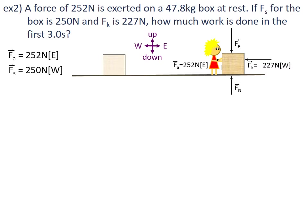Before we move on, we should switch that so it is east as well. Fk is going to be equal to negative 227 newtons in the east direction, and we'll add that to our variable list. Now, what else have we been given information-wise?